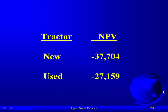We have both tractors with their net present values. The new tractor has a net present value of negative $37,704 — that would be its cost. The used has negative $27,159. Which of these would you choose based on net present value? The used one seems to have the lowest cost.